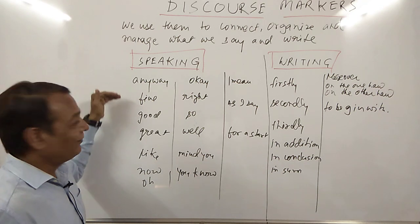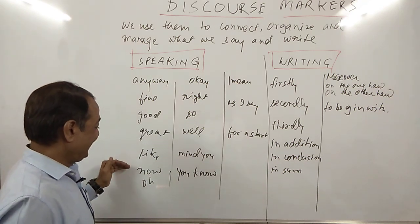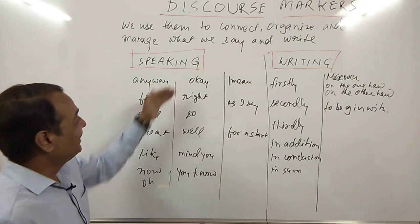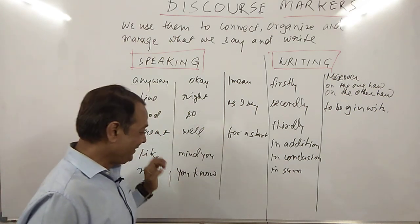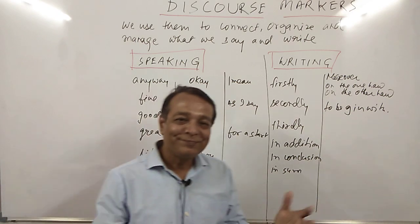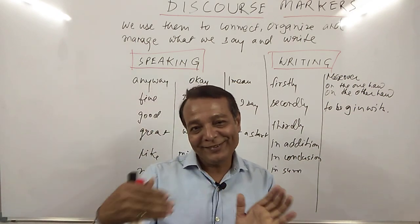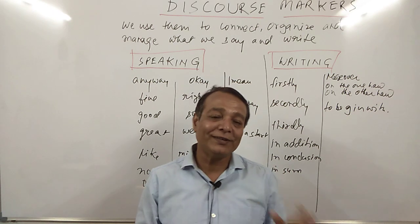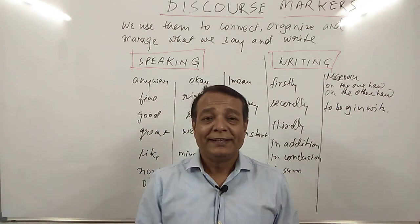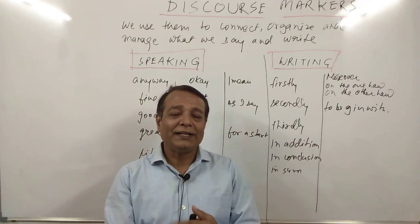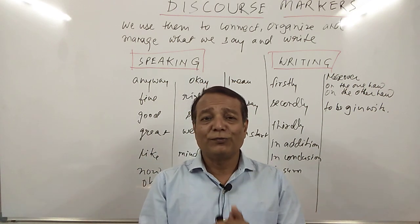The spoken discourse markers include: anyway, fine, good, great, like, now, oh, okay, right, so, well, mind you, you know. All speakers of the English language all over the world use these discourse markers. Actually, these are not required words — it's not a grammatical requirement, but all speakers use them.